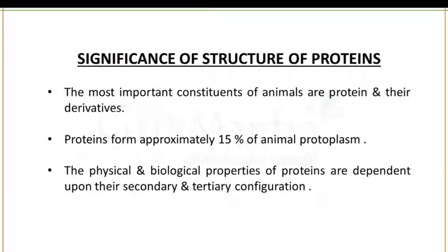The significance of the structure of proteins: proteins are the most important constituent of animals and are the basic need for the development of a human or animal body. Protein forms approximately 15% of the animal protoplasm — this is a very important point. The physical and biological properties of proteins are dependent upon their secondary and tertiary configuration.